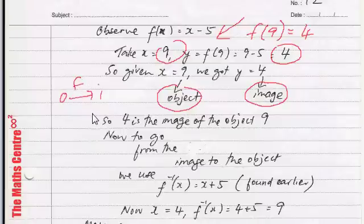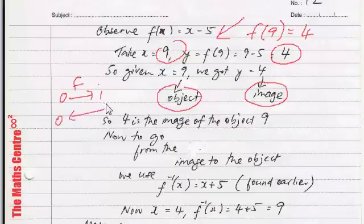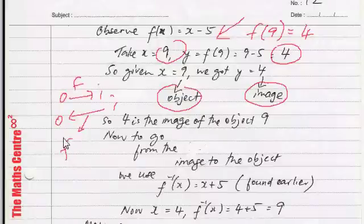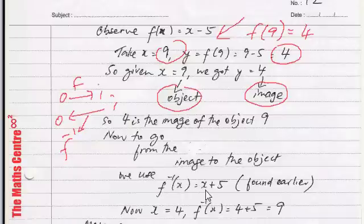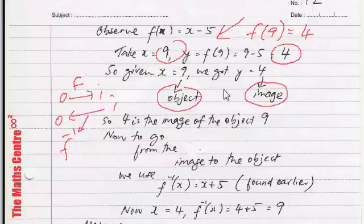Now, we have gone from the object to the image by using f. Now, we learn inverses because we want to go from the image back to the object. So, if you want to go from the image back to the object, then here we have to use the inverse function. That's the reason we study inverses. So, if you have f inverse x, which we also found earlier to be x plus 5. So, remember from 9 we went to 4. Now, we want to go back to 9. We will use x equals to 4 now.